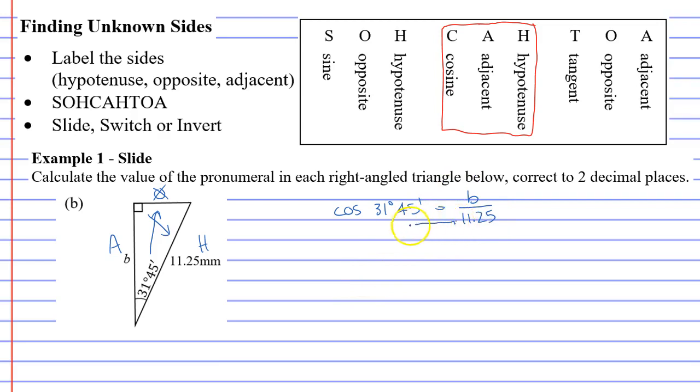And if you have a number at the bottom, you slide it to the front, giving us 11.25 times COS 31 degrees 45 minutes, which equals B. I shouldn't have put the equal sign at the beginning.